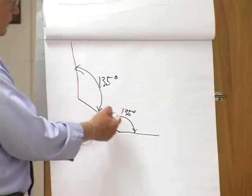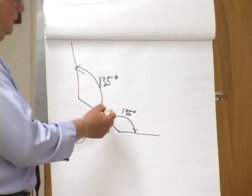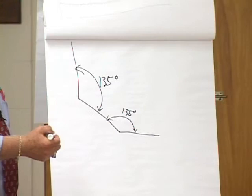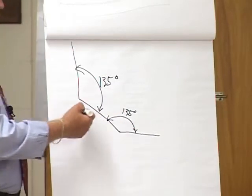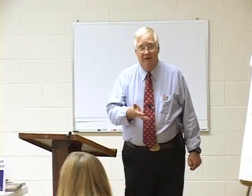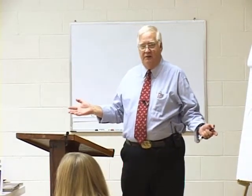So that you have a 135-degree angle here, a 135-degree angle here, and a flat space in between — you don't need a radius on either one of them. So it can be a fairly small thing, but as far as a microbe is concerned, it's a very big area, and they don't collect, and it is cleanable.